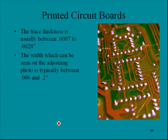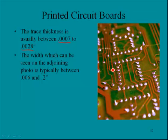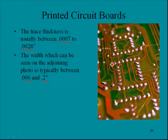Another method is printed circuit boards. Earlier in this chapter we saw this graphic — one of the methods for connecting devices is through traces. Traces can be on multiple layers of electronic boards. The thickness of these traces is typically between .007 to .0028 inches, which is quite thin. The width is typically between .006 and .002 inches. On this board you can see some traces are quite wide while others are very narrow, sometimes down to around .006 of an inch.